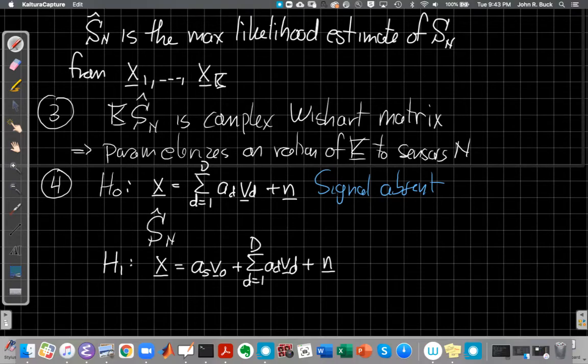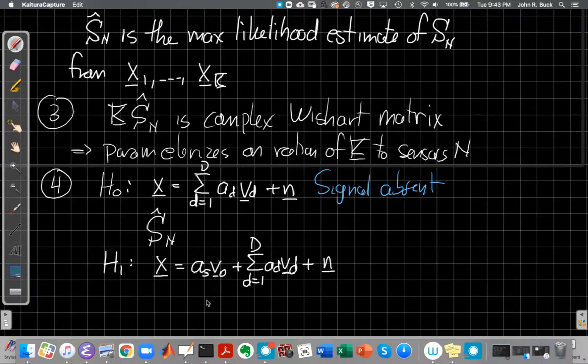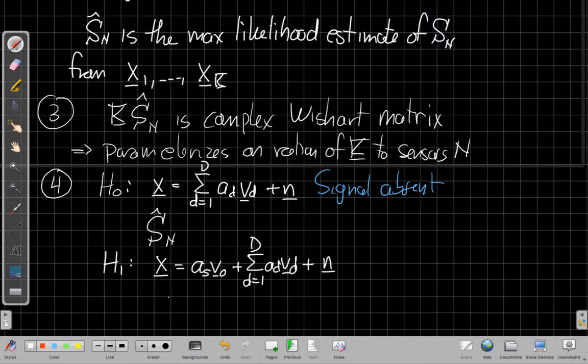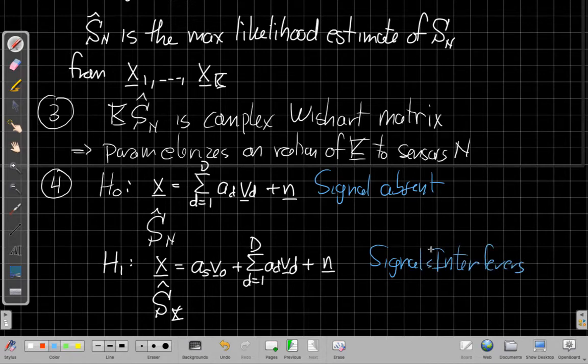Van Trees makes a distinction between that. We can think of that in our hypothesis testing frame. In H0 we may have a sum of a bunch of interferers V1 through VD plus background noise but there's no signal, the signal is absent. The notation Van Trees would use is that we have S hat of N like we're using above. This is the estimate of this data. On the other hand with H1, this is the version that has all those interferers and noise plus the signal of interest present.